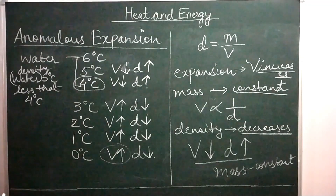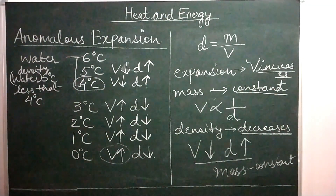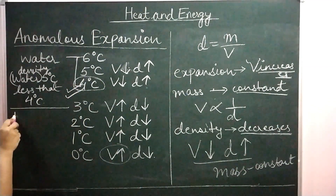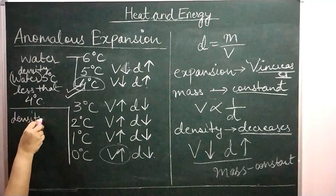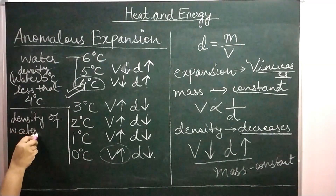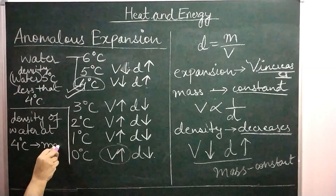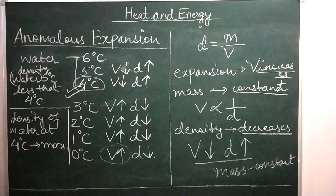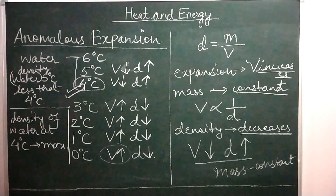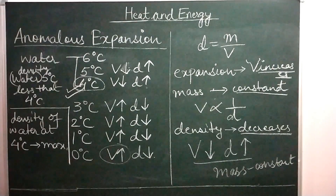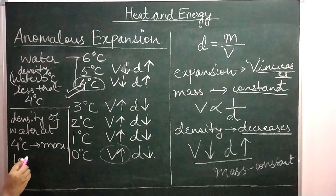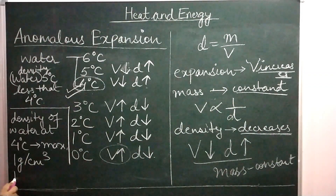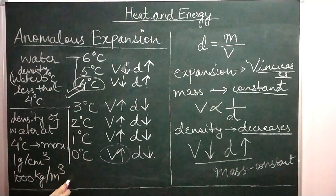So to summarize: the density of water at 4 degrees Celsius is maximum. Above 4 degrees Celsius, density was less than this value. Below 4 degrees Celsius, density further reduced. So 4 degrees Celsius is the temperature at which we get maximum density. The density of water at 4 degrees Celsius is found to be 1 gram per centimeter cube, or 1000 kilograms per meter cube. At 0 degrees Celsius, the process of ice formation begins — the freezing process starts — and hence the density of ice is less than the density of water at any temperature. Therefore you will always find that ice floats.